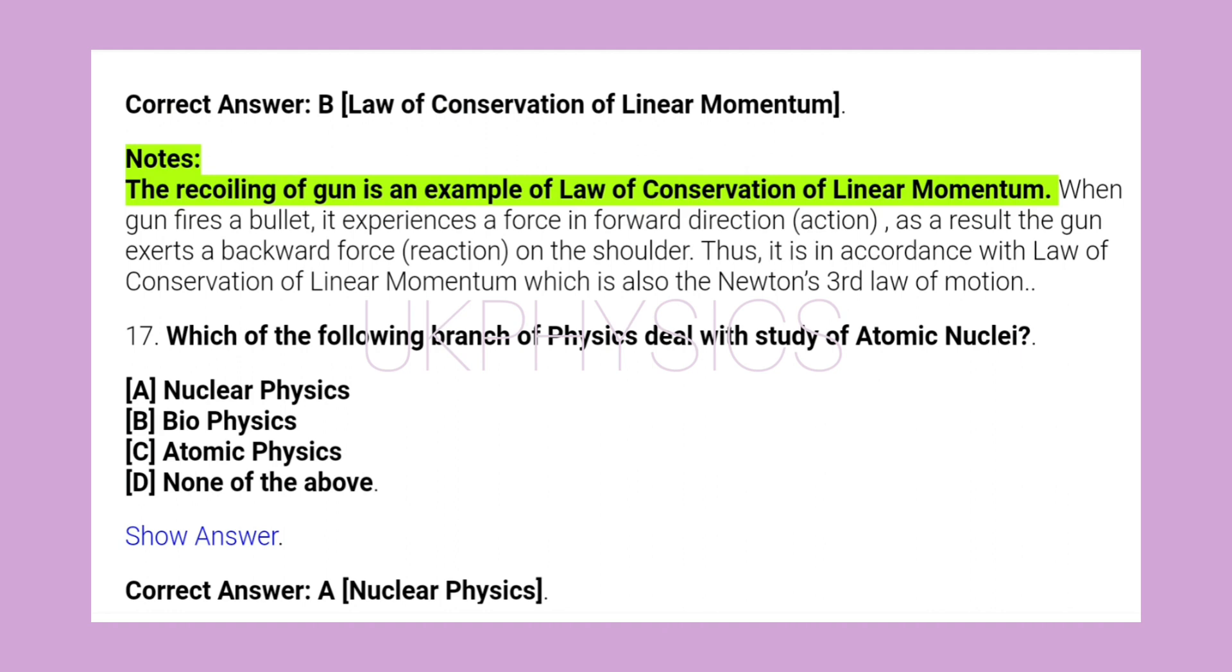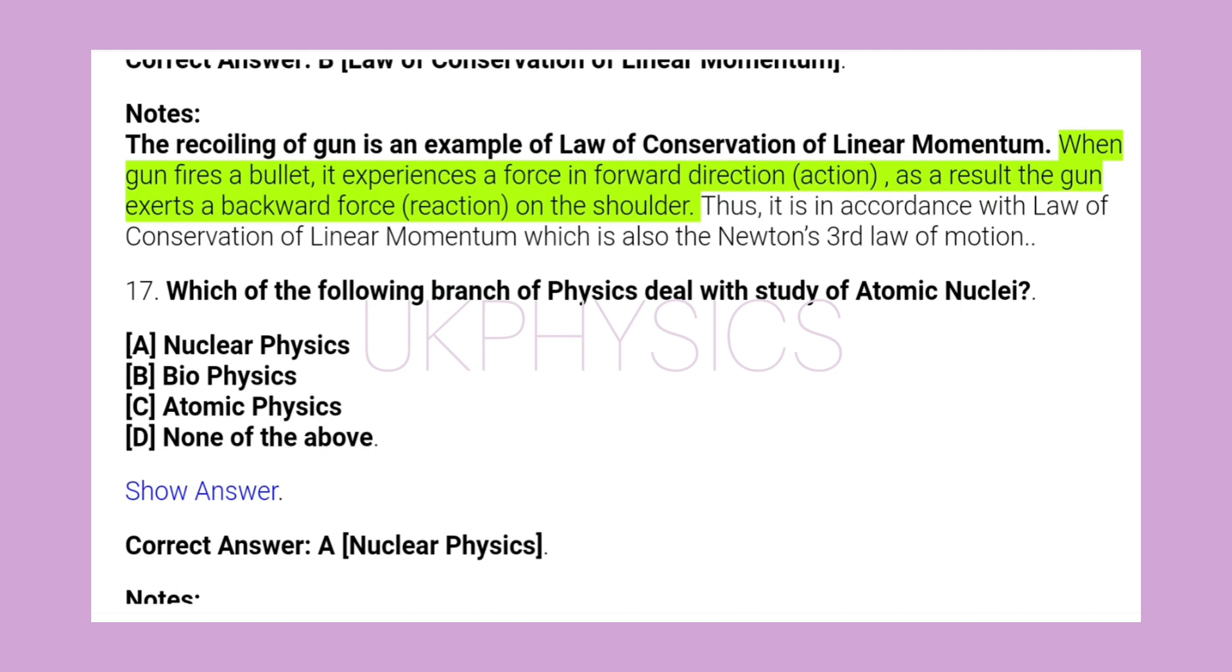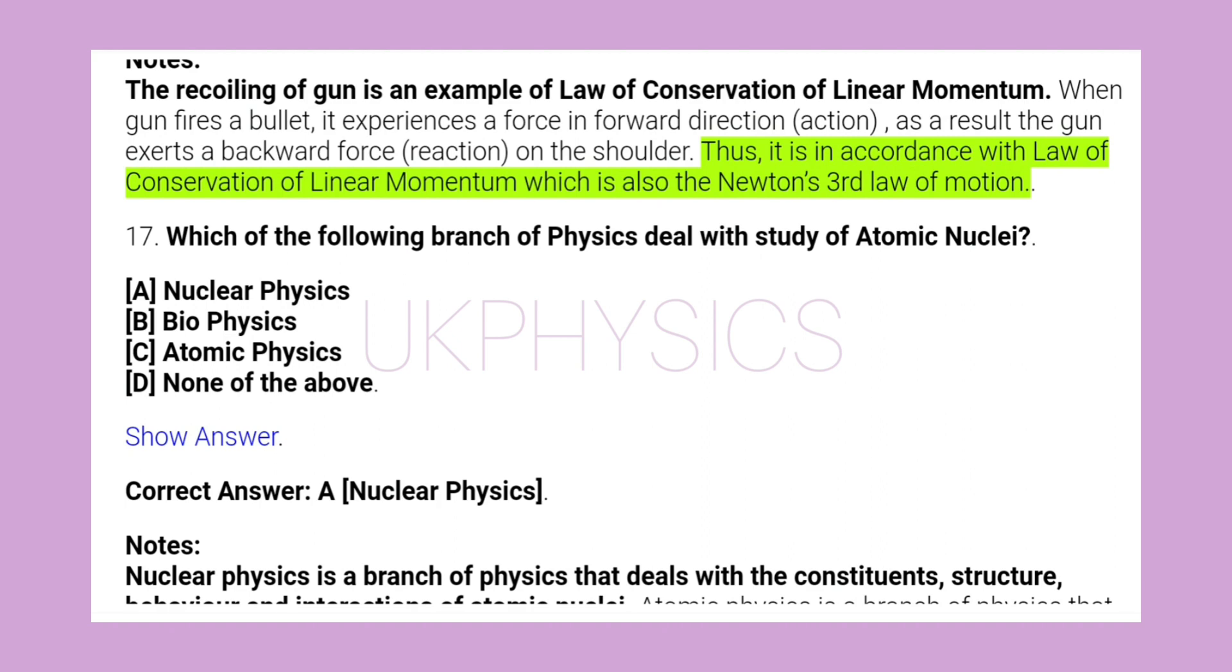Notes: The recoiling of gun is an example of law of conservation of linear momentum. When gun fires a bullet, it experiences a force in forward direction (action). As a result the gun exerts a backward force (reaction) on the shoulder. Thus it is in accordance with law of conservation of linear momentum which is also the Newton's third law of motion.